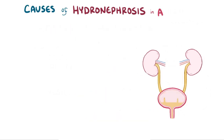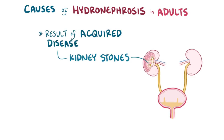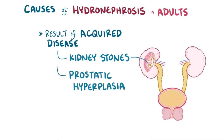In contrast, adults with hydronephrosis usually develop it as a result of an acquired disease, like kidney stones — which is the most common cause — as well as prostatic hyperplasia, or enlarged prostate, which blocks the flow of urine out of the bladder.